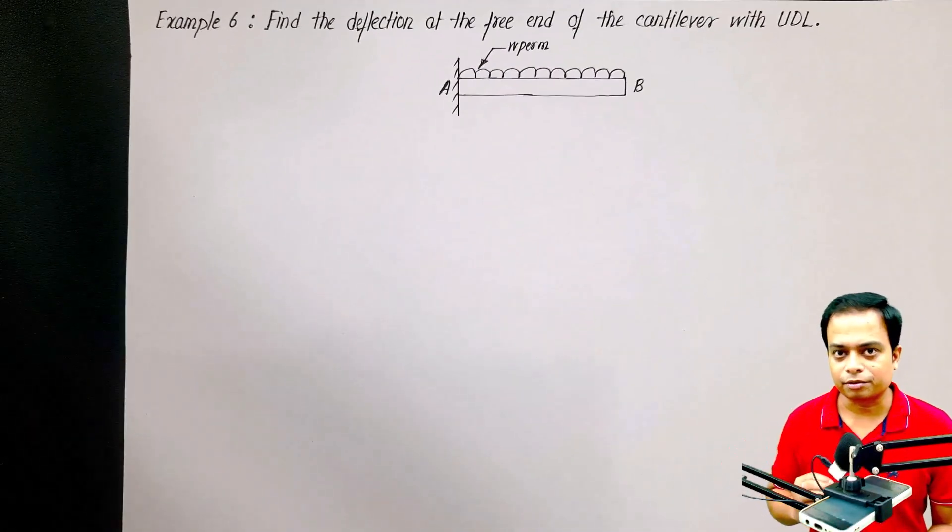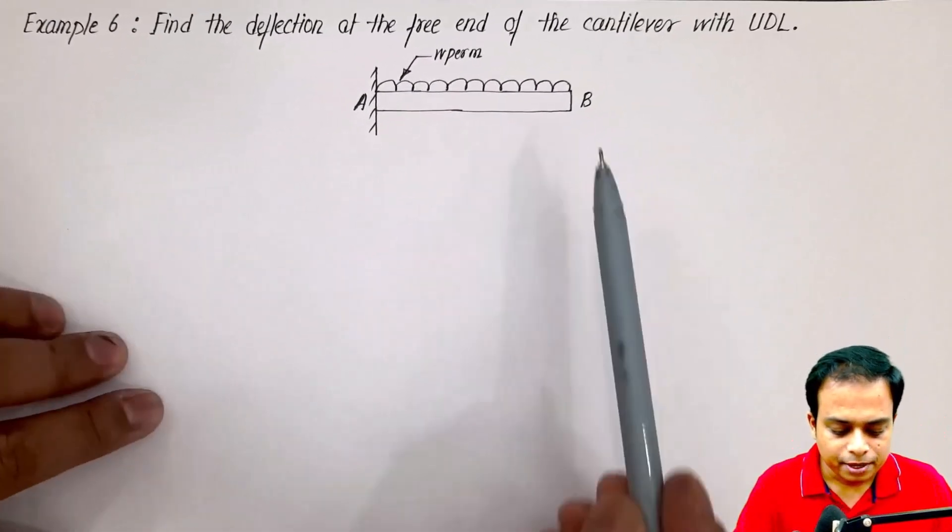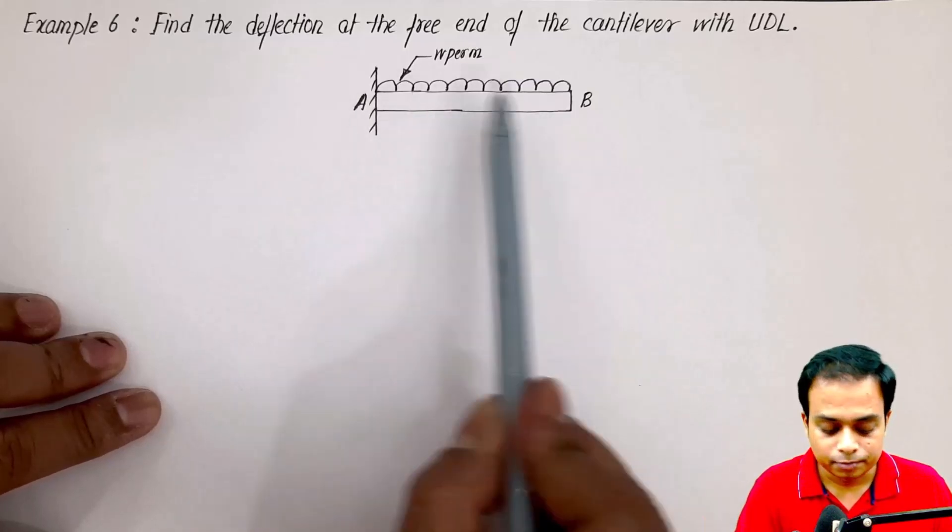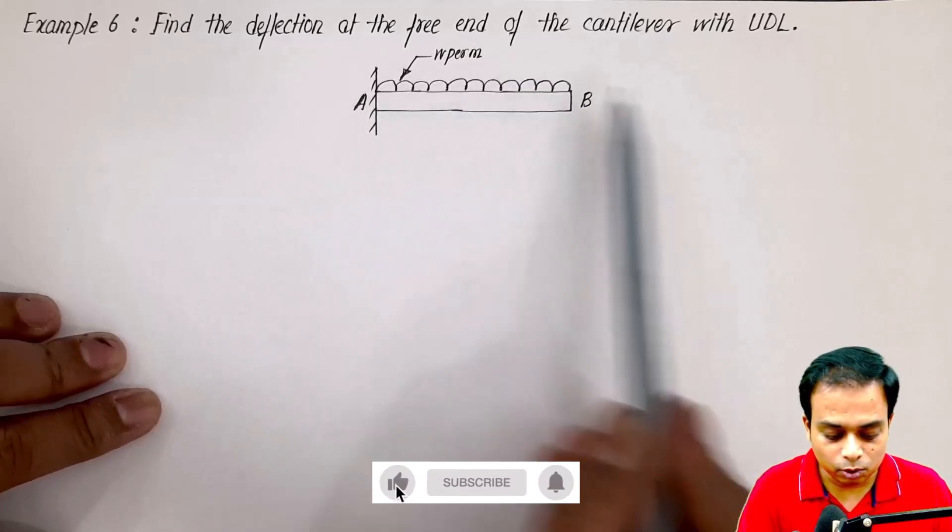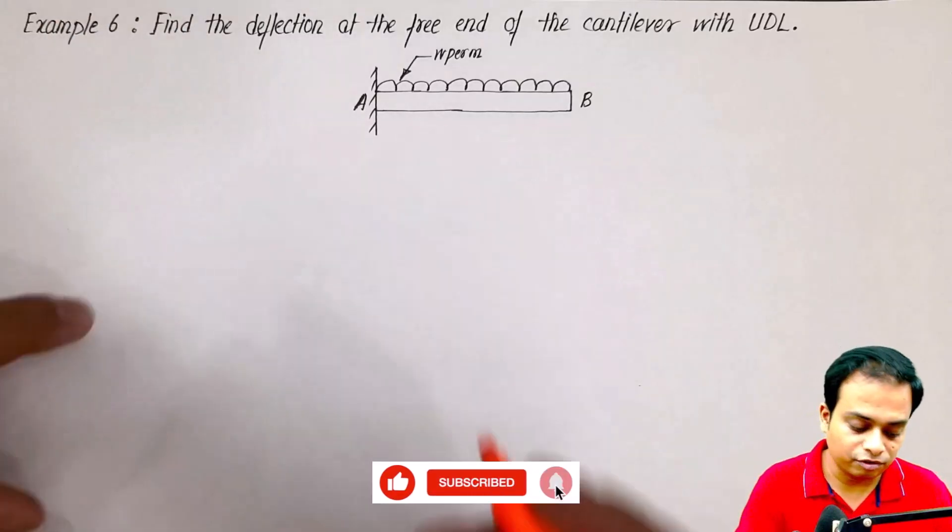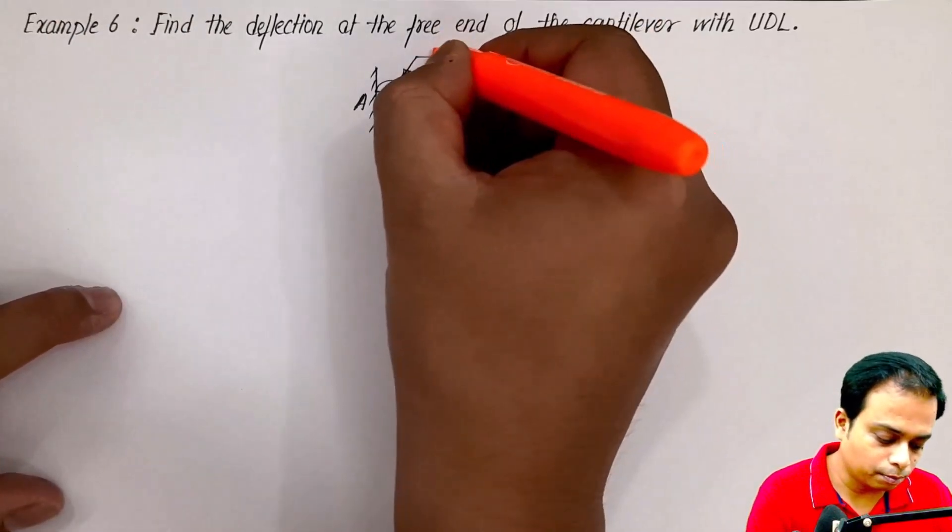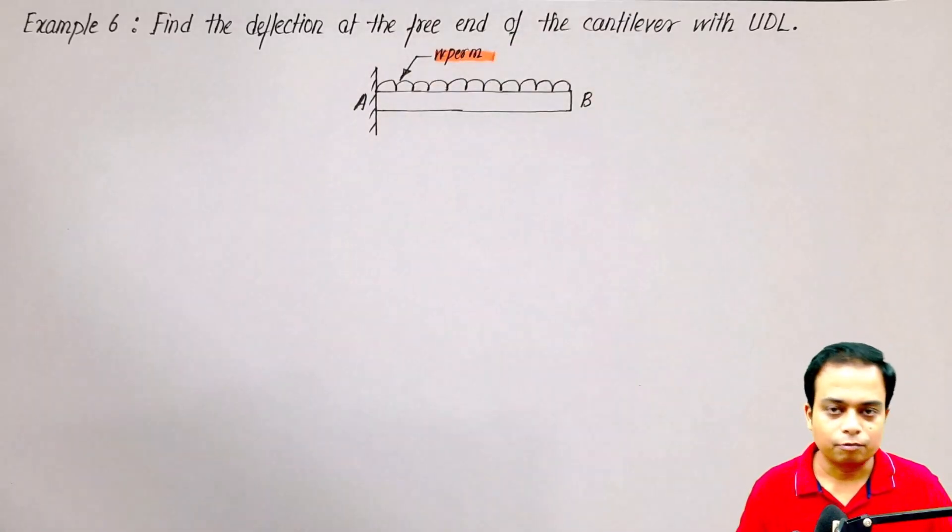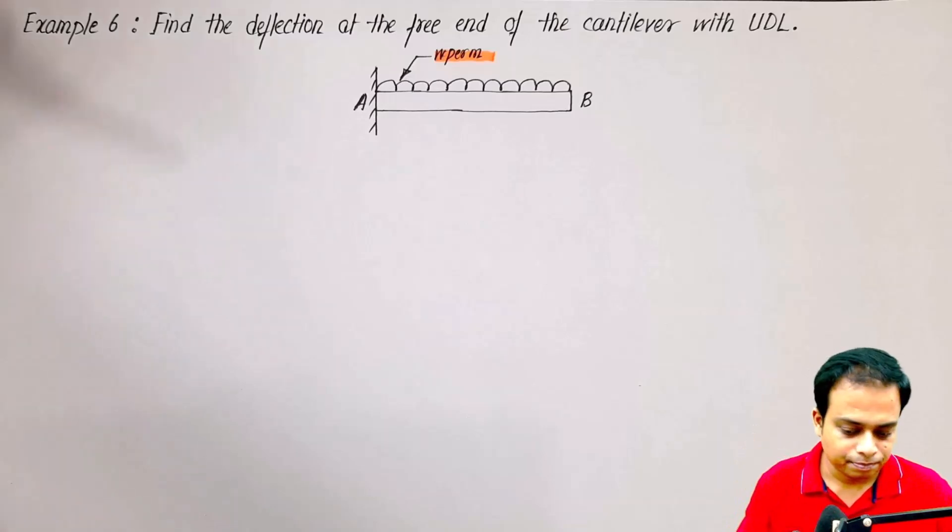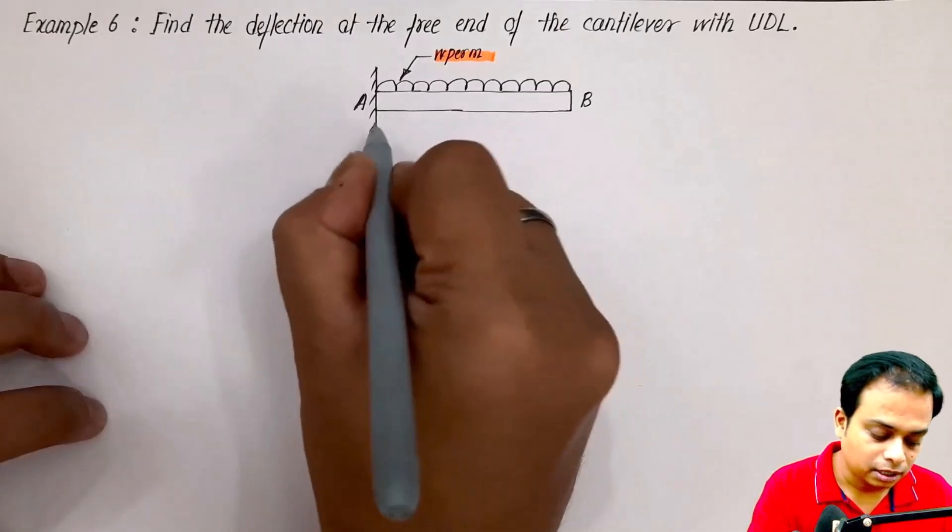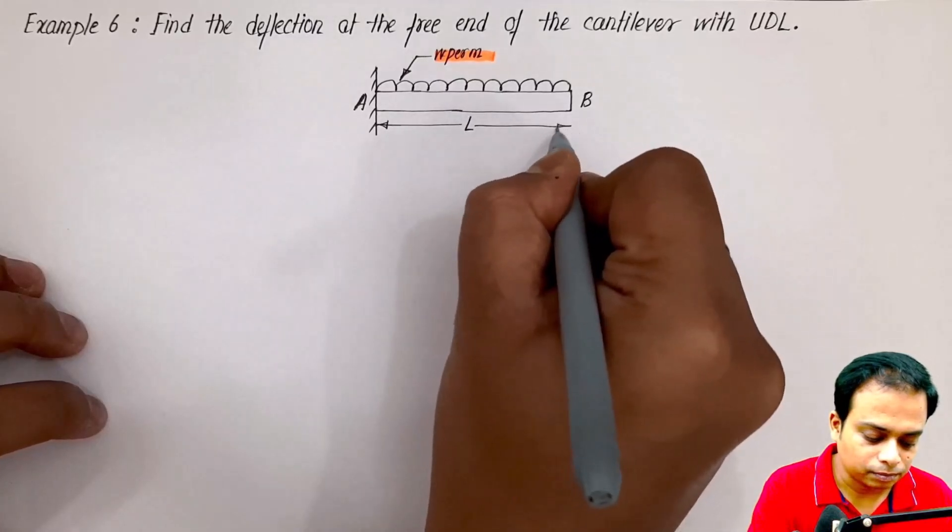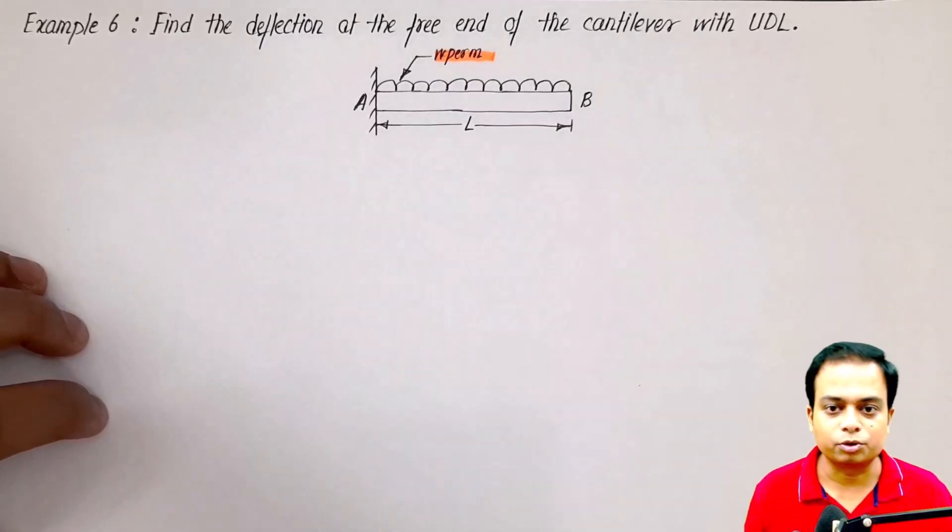On to example number six, where we will try to find the deflection at the free end of this cantilever beam with uniformly distributed load having magnitude of w per meter run. That means for a length of one meter, the total load acting will be w. One more thing to note is that the length of the beam is L. Now how to proceed with such a question and how to use Castigliano's theorem?